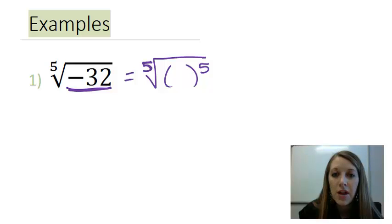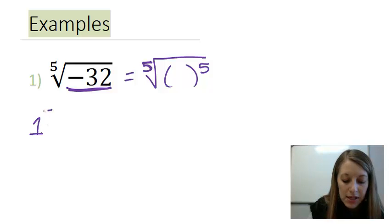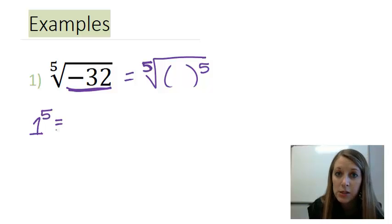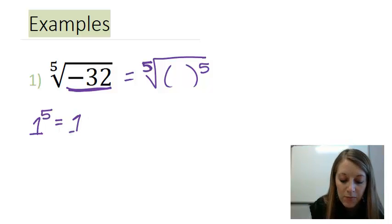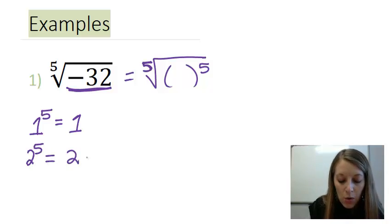If I think of numbers times itself five times, one times itself any amount of times, especially five times, will just give me one in itself. So, moving on to my next number, two to the fifth power works out to be two times itself five times.